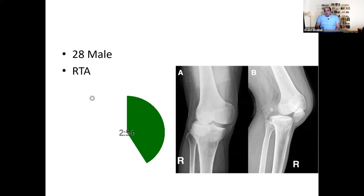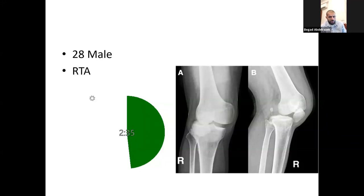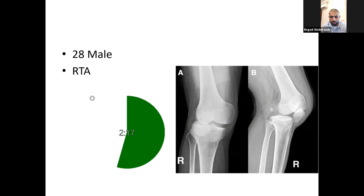I'll admit the patient for observation of the neurovascular status. He's neurovascularly intact at the moment. I will admit him for observation of the circulation, limb elevation, application of ice, monitor the swelling in the knee immobilizer or back slab, and then discharge the patient. This is our initial management for the knee dislocation. I'm worried about injury of the knee ligaments — the cruciates and the collaterals. I will schedule him for follow-up in two weeks, at which point we should consider ligament reconstruction after doing an MRI and examination of the knee.